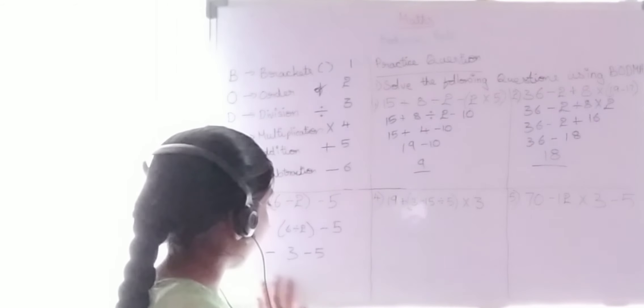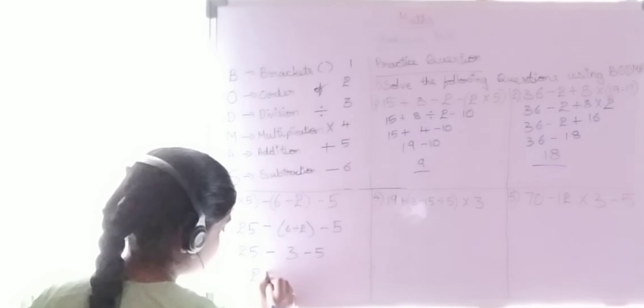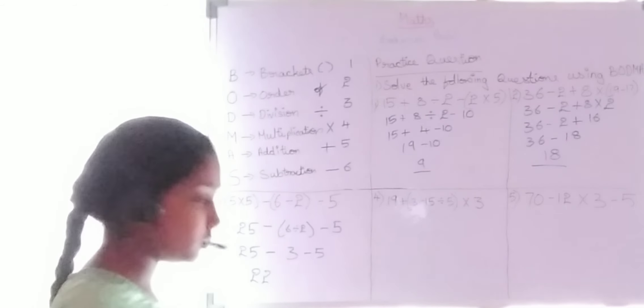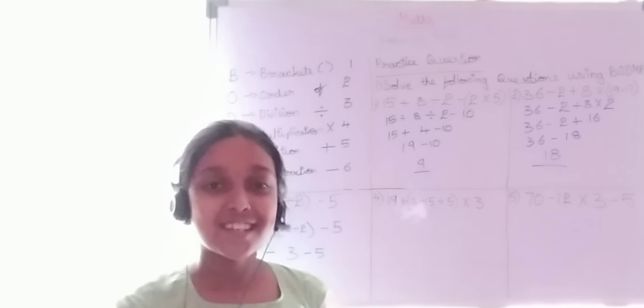25 − 3 = 22. Then 22 − 5 = 17. The final answer is 17.